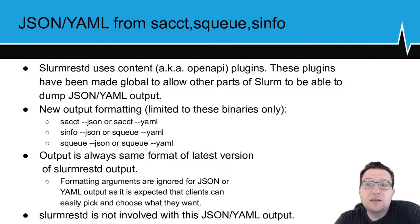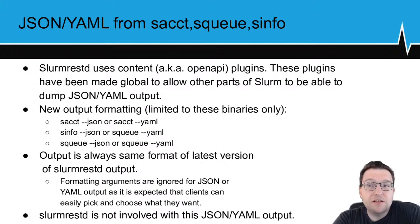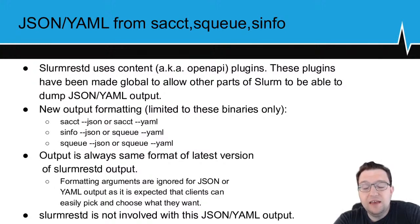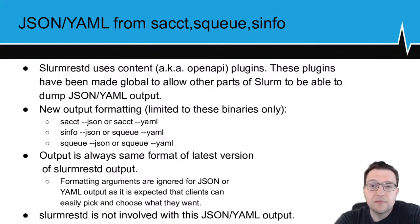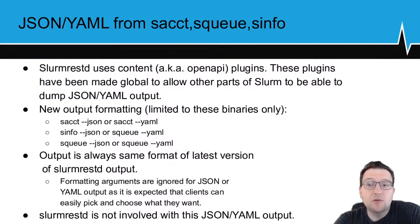This is a new feature for 21.08: outputting JSON or YAML directly from sacctmgr, sinfo, or squeue. We've taken the plugins inside of Slurm REST D and moved them to a common location, allowing these three commands — and potentially more later — to dump outputs directly, avoiding using Slurm REST D entirely to get this information. Note that for sacctmgr and the others, if you provide formatted options they will be ignored, since with JSON or YAML you can easily ignore what you don't want.